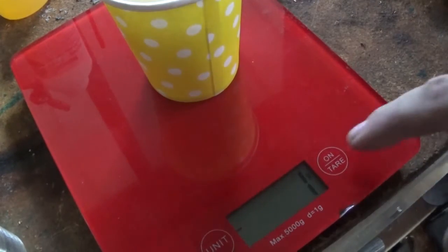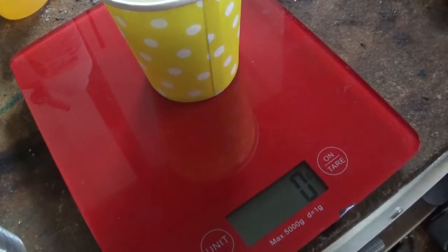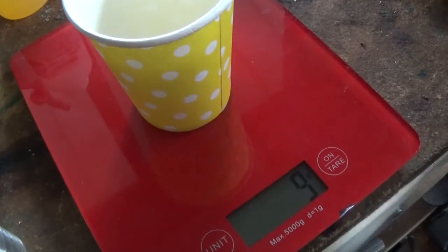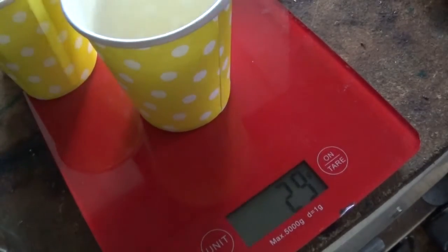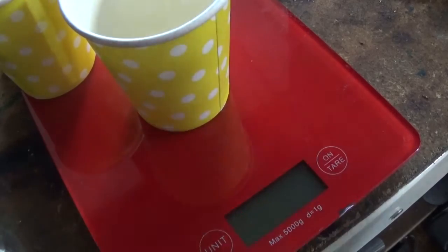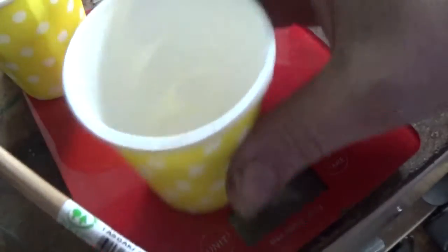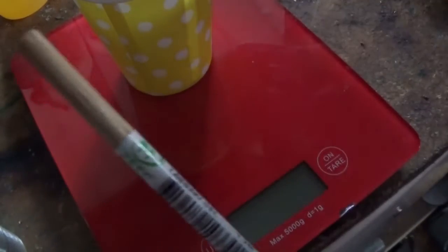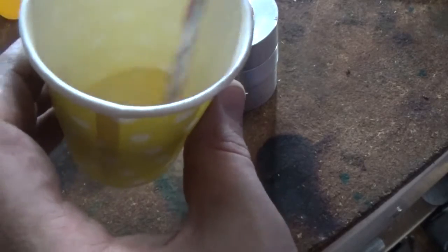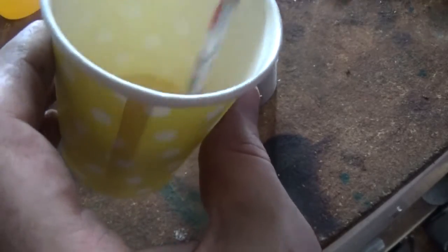And in the other cup, 9 grams of part B. There we go. And a plastic spoon to mix them together. Found a bit of dowel there. According to the sheet we've only got about 15 minutes work time, so we want to be pretty quick about this I think.